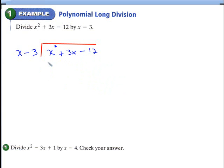This is how the process starts. Some term times x has to give you this — in this case it's going to be x. x times x will give us x squared. x times negative 3 will give us negative 3x. Always make sure you're lining up the like terms underneath each other.